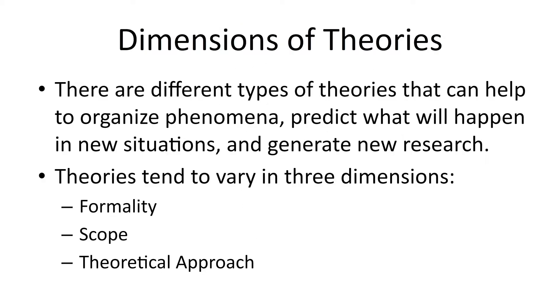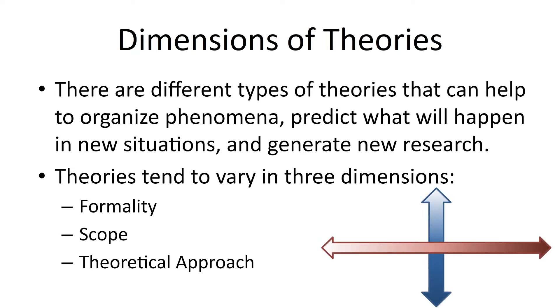There are different types of theories that can help to explain phenomenon, predict what will happen in new situations, and generate new research. The theories that we use tend to vary in three dimensions: formality, scope, and theoretical approach. Here are a few things about each of these three dimensions.